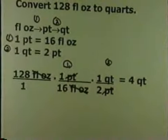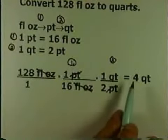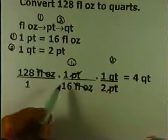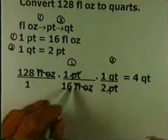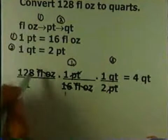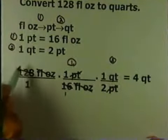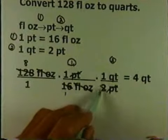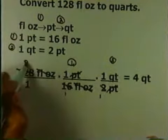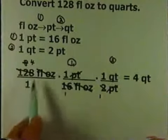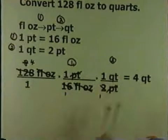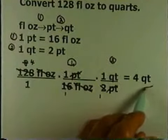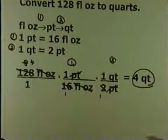If you do the math on this, you'll get the answer is four because I can reduce by 16. 16 goes into 16 once, 16 goes into 128 eight times. 2 goes into 2 once, 2 goes into 8 four times. 4 times 1 times 1 is 4, so the answer is 4. 1 times 1 times 1 is 1. 4 over 1 is 4, so the answer is 4 quarts.